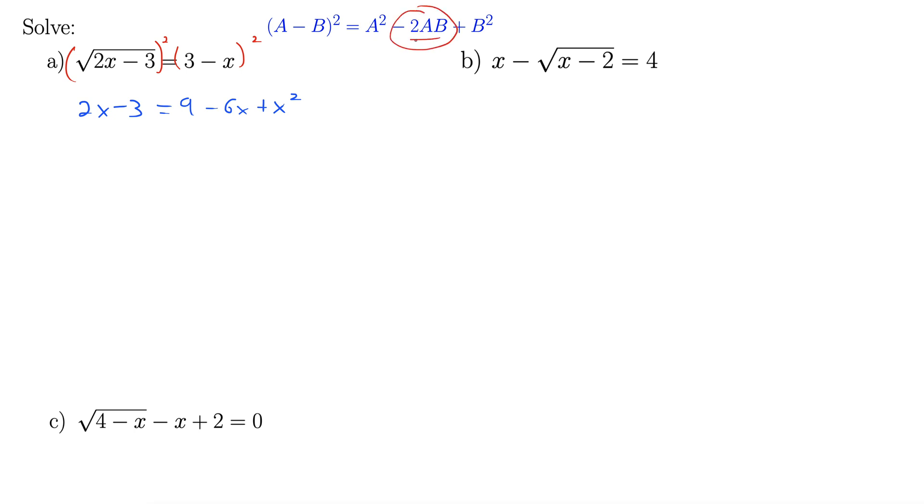Right, so it's really important that you remember this 2ab term all the way through these kinds of problems, these radical problems. Right, this shows up again and again. You want to have this 2ab term in there. So our 2ab term is right here. That's that negative 6x. It is not the case that the 2 just comes through to both these terms. Okay, onward we go.